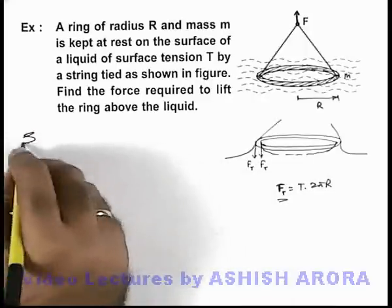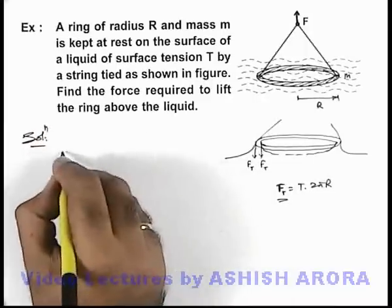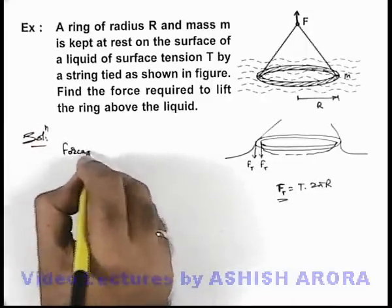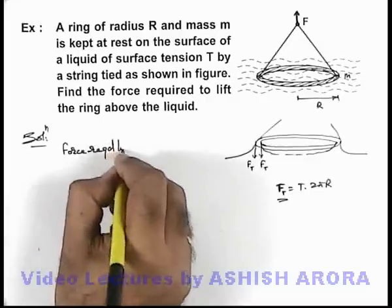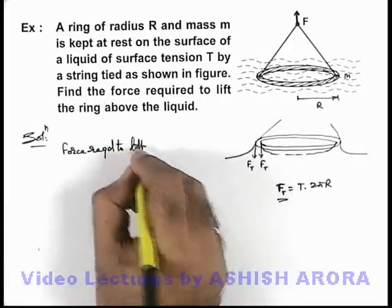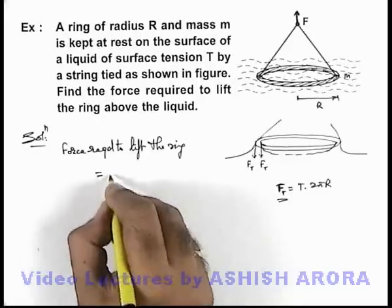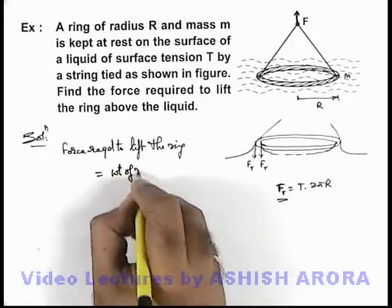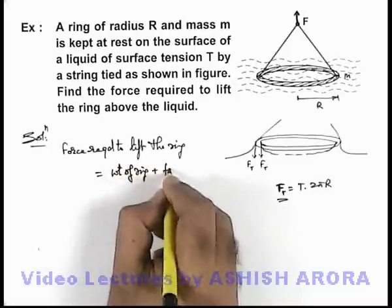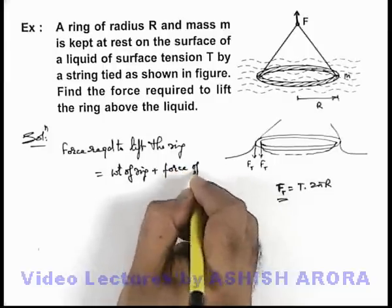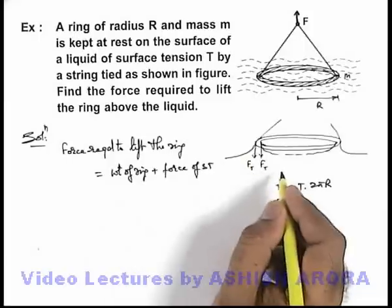So we can simply state in the solution of this problem: force required to lift the ring is equal to weight of ring plus force of surface tension which is acting in the downward direction.